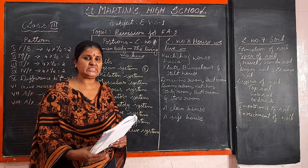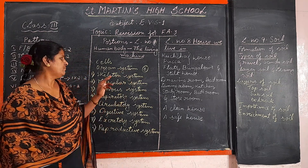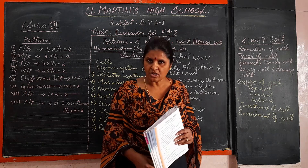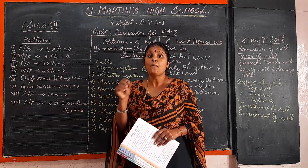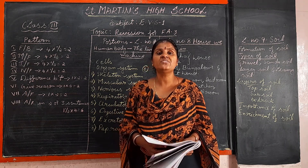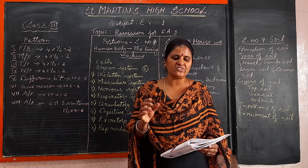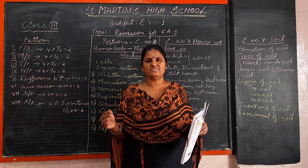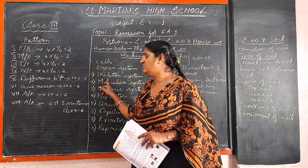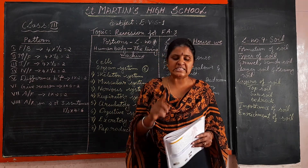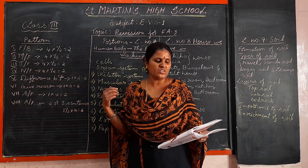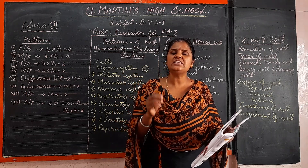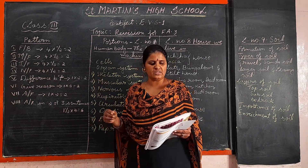The skeletal system gives shape and support to our body. It is made up of bones. It protects the internal organs and helps us to move. We have 206 bones. The functions of the skeletal system: it gives shape and support, helps limbs and other parts to move, and protects the internal organs.